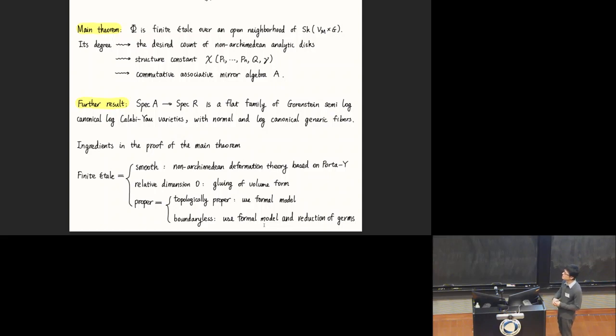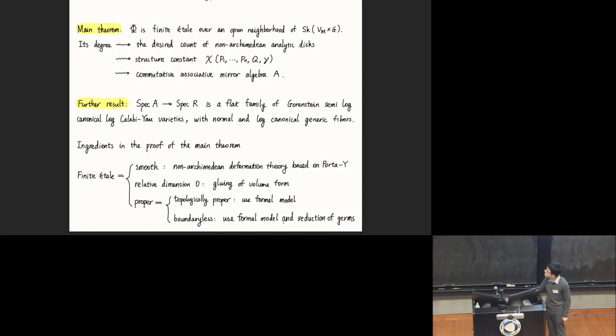Grothendieck suggested that maybe we can use formal models to translate everything about non-Archimedean geometry into algebraic geometry and apply all the tools from algebraic geometry. In particular, we will use a technique called the reduction of germs, developed by Michael Temkin. In response to a question about the relationship between A and the map φ: the map φ gives the conditions for counting curves—we ask some marked point to go somewhere, fixing conditions so that we get a finite number of curves.